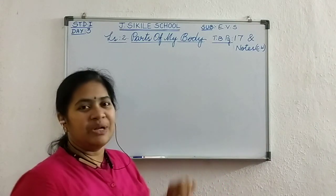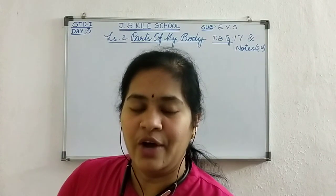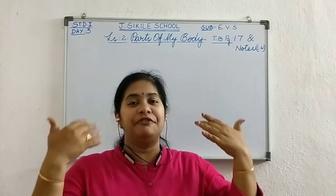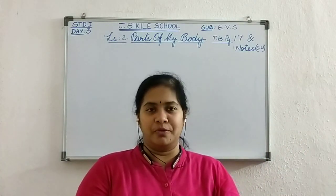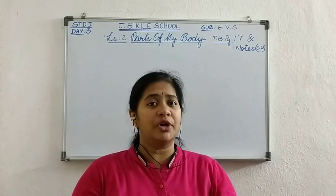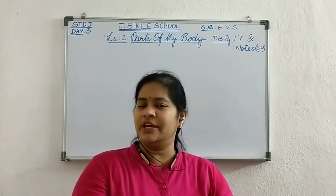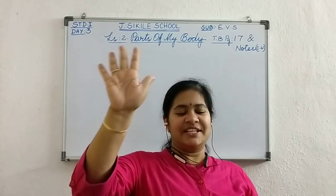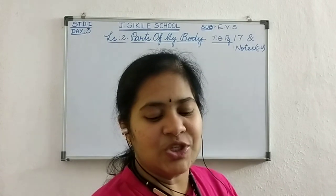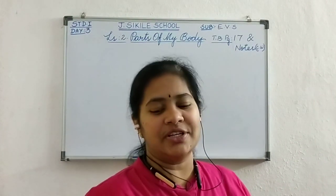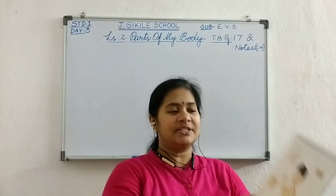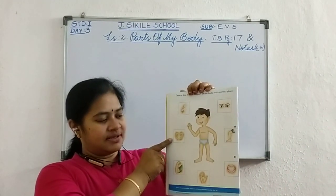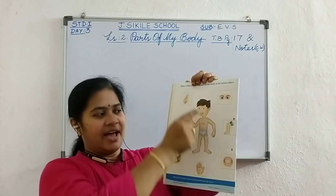Shall we go into the lesson now? I have already told you there are different parts in our body, and we do different activities with different parts of the body. Yesterday, I told you about 5 different organs. What are the important 5 organs we have? 5 sense organs we have. What are the 5 different sense organs? Eyes, nose, ears, tongue, and the skin.